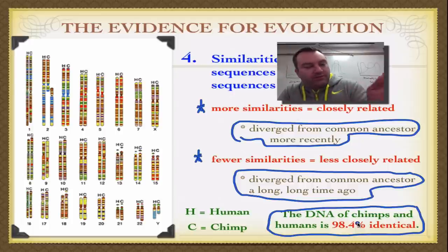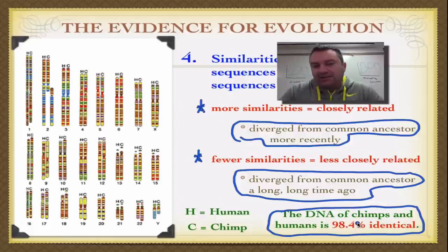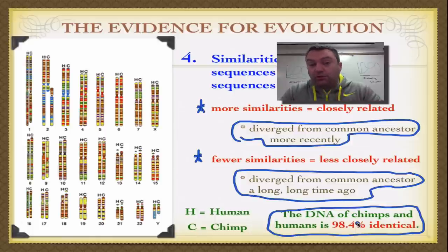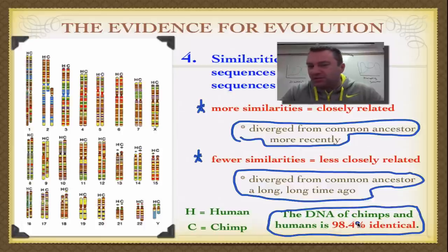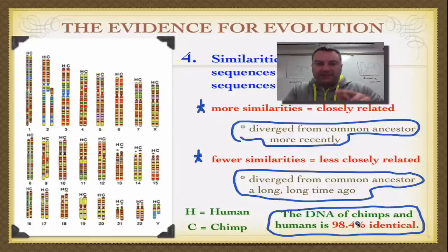That 1.6% difference is enough to make humans vastly more intelligent, able to walk upright, and have better fine motor skills — sending us on a totally different evolutionary path. This wraps up this series on evolution. A second series called Evolution 2 will look at more of the genetics behind evolution. Until our next series, catch you on the flip side.